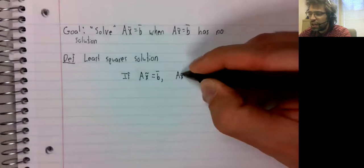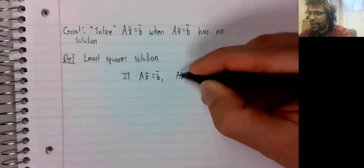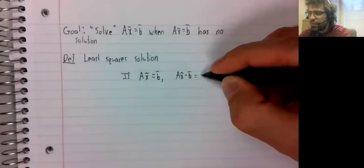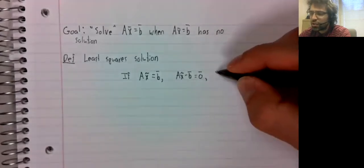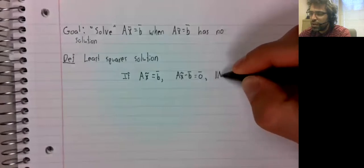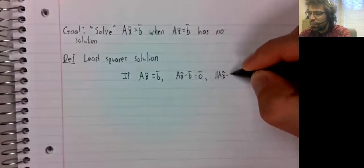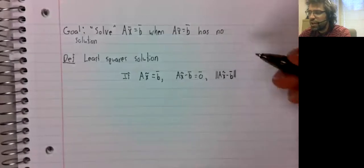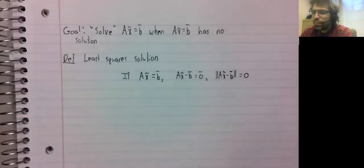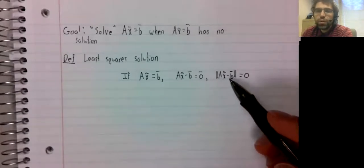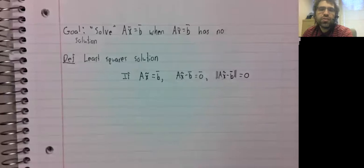then A x tilde minus b would be the zero vector, and the norm of A x tilde minus b, the distance between them, would equal zero. They are equal, so the distance between them is zero.